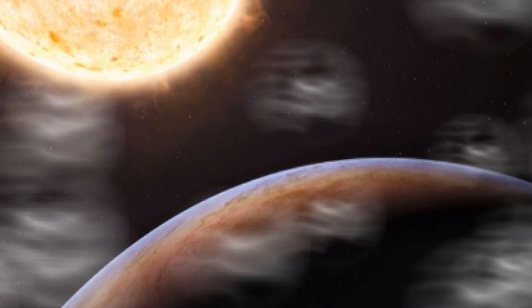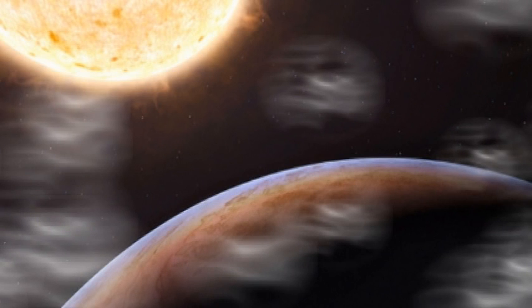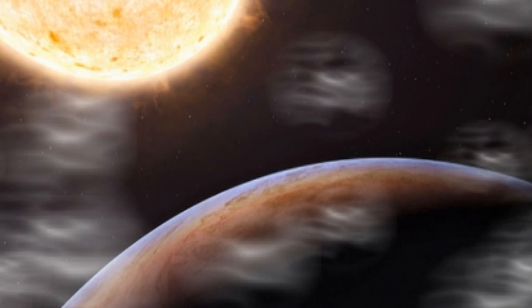The newfound planet, called HIP 13044 b, survived through its star's red giant phase, which our own Sun will enter in about five billion years. Studying it could offer clues about the fate of our solar system as well, researchers say.